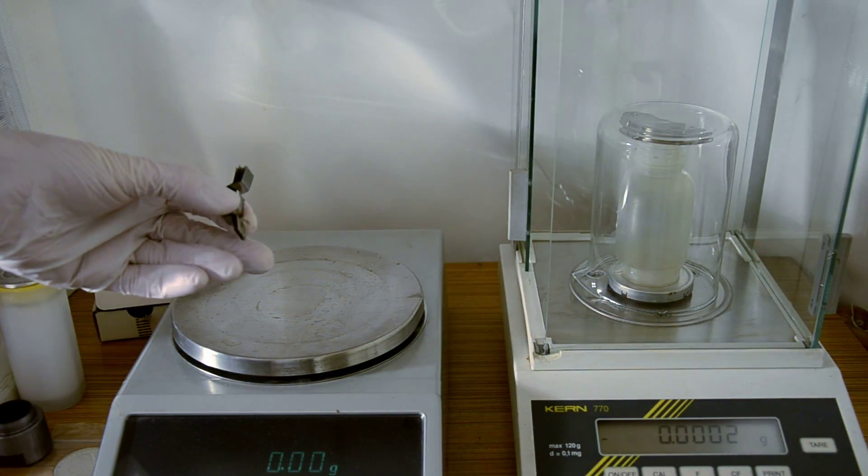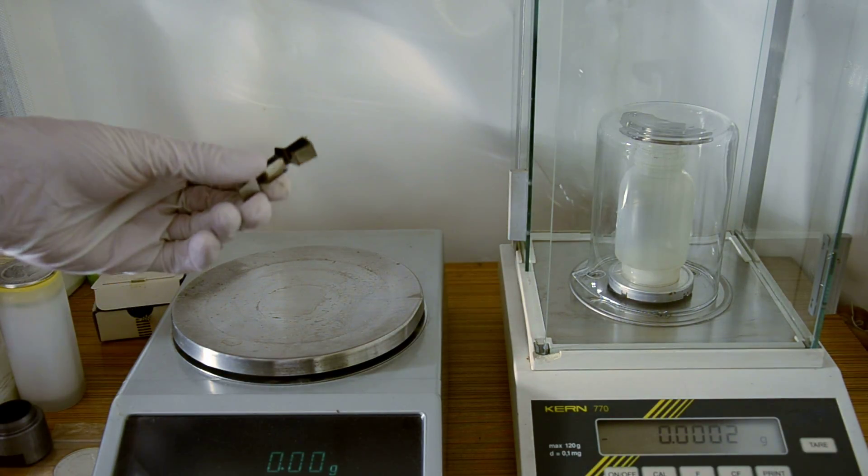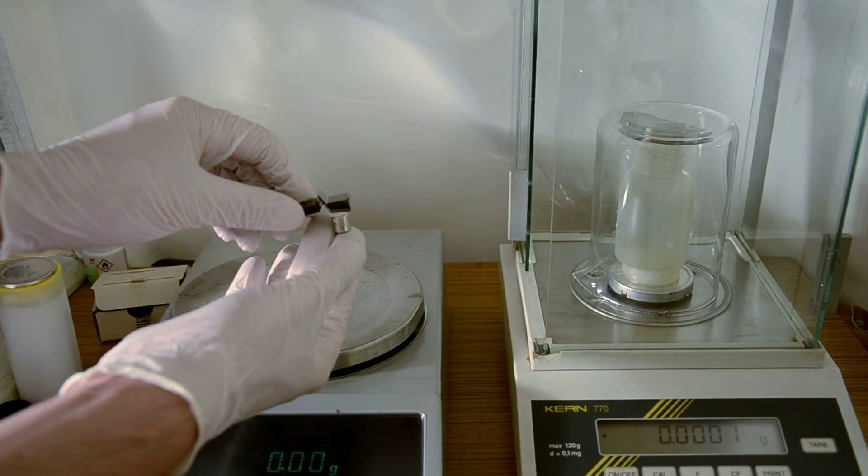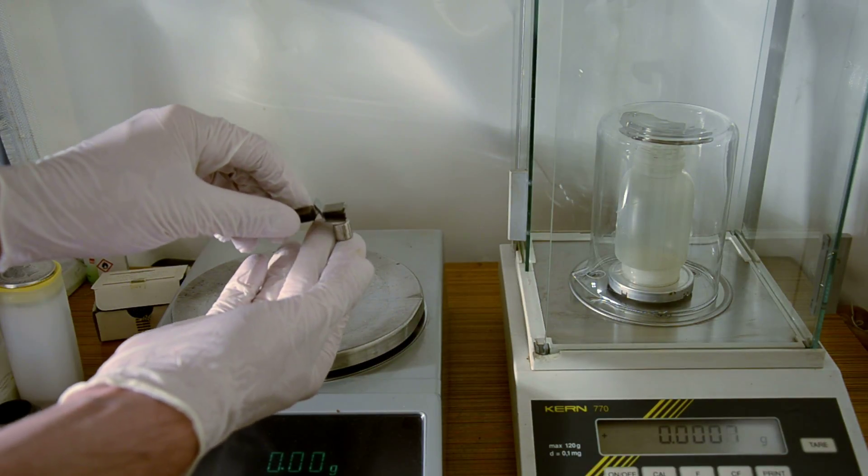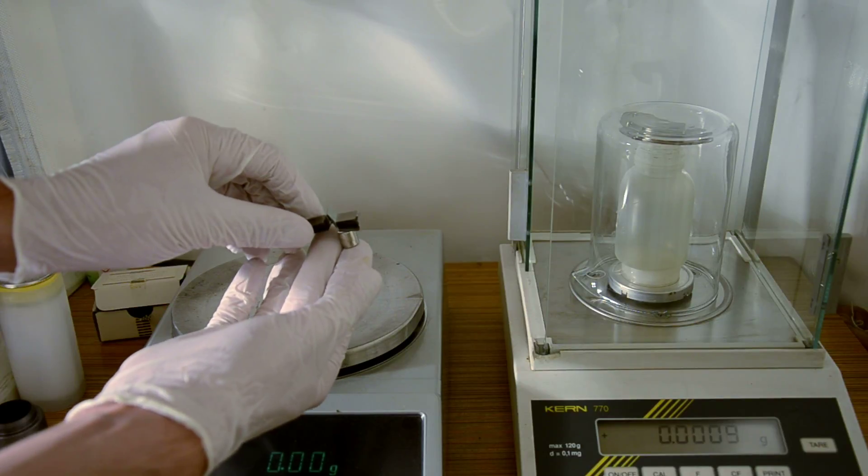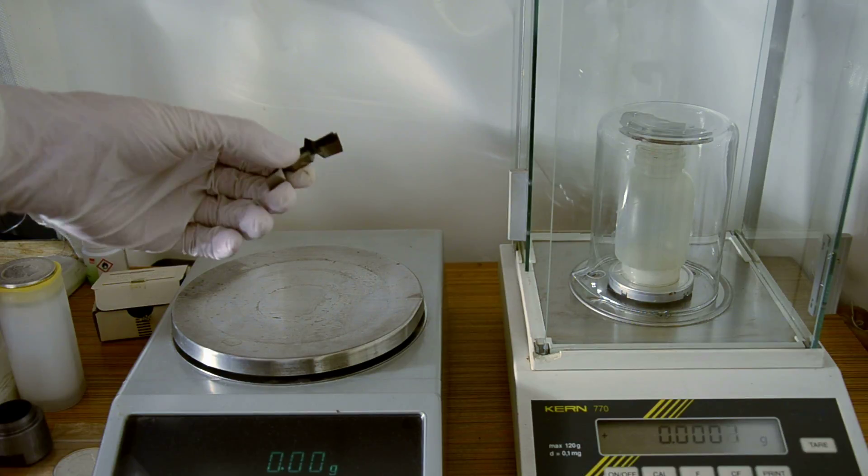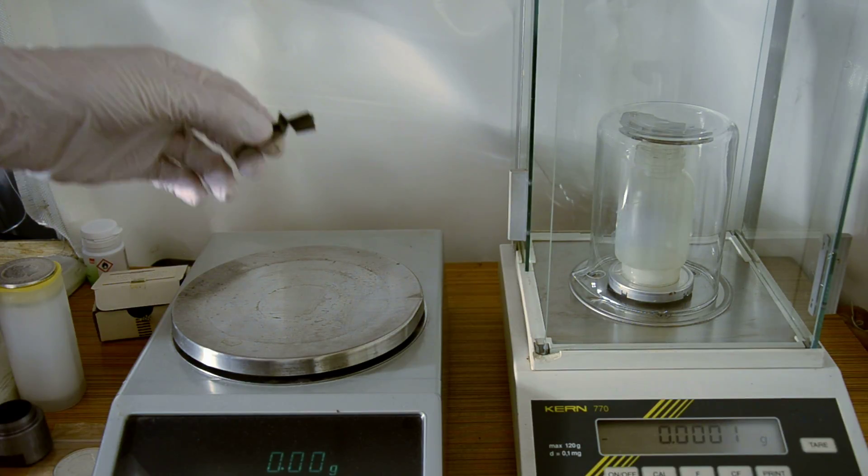And then there are paramagnetic substances like this tungsten. You see it doesn't interact with the magnet, but in reality it gets attracted a little bit to the magnet. But again, it is very weak so you can't spot it.